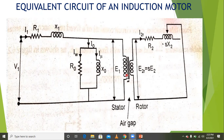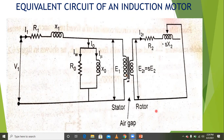The main difference between an induction motor and a transformer is that in a transformer, there is a core between primary and secondary windings. But in an induction motor, there is only an air gap present between the stator and rotor.